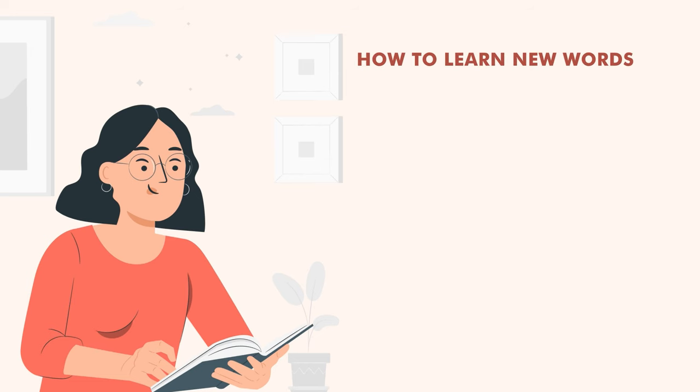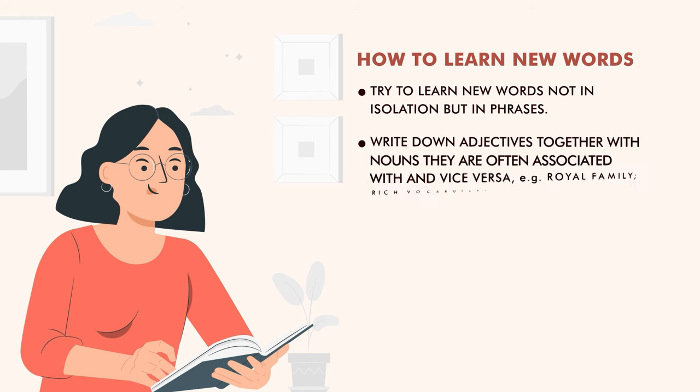Now, how to learn new words? You do not learn new words in isolation but with other associated words and phrases. So you write down adjectives together with the nouns that they are associated with, and vice versa. So you will have 'a royal family' and 'a rich vocabulary.' You don't learn 'royal' separately and 'family' separately, and 'rich' separately and 'vocabulary' separately — they are all interconnected. That's the beauty of all languages, and especially of English.